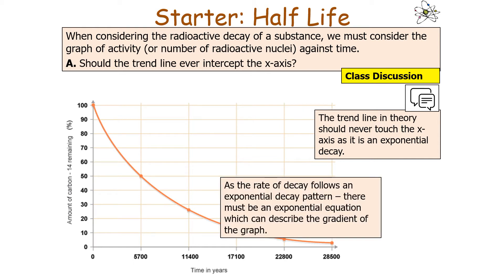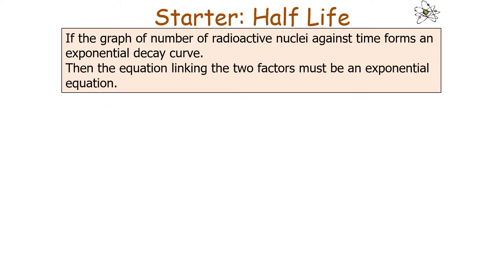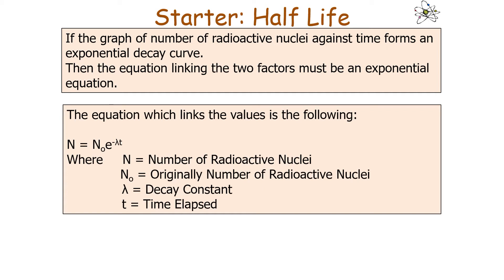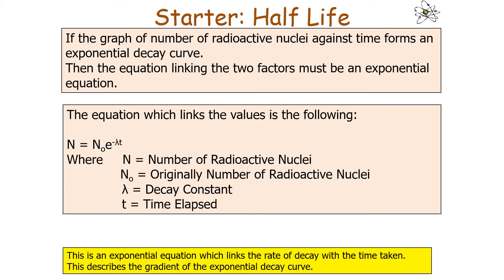Since the rate of decay follows an exponential decay pattern, there must be an exponential equation describing the gradient of the graph. If the graph of the number of radioactive nuclei against time forms an exponential decay curve, the equation linking the two must be exponential. That equation is: N equals N₀ e to the power minus lambda t, where N is the number of radioactive nuclei present, N₀ is the original number, lambda is the decay constant, and t is the time elapsed.